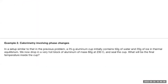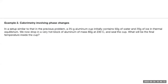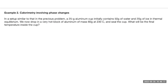Now let's look at a second example. This one involves phase change. You have a similar setup: a 25-gram aluminum cup, but this time it initially contains 50 grams of water and 20 grams of ice in thermal equilibrium. They didn't state the initial temperature, but it's common knowledge: when water and ice coexist in thermal equilibrium — no heat exchange — the temperature must be zero degrees Celsius. That's how we define zero degrees Celsius; that's when water undergoes phase change to ice and vice versa. So the initial temperature is zero degrees.